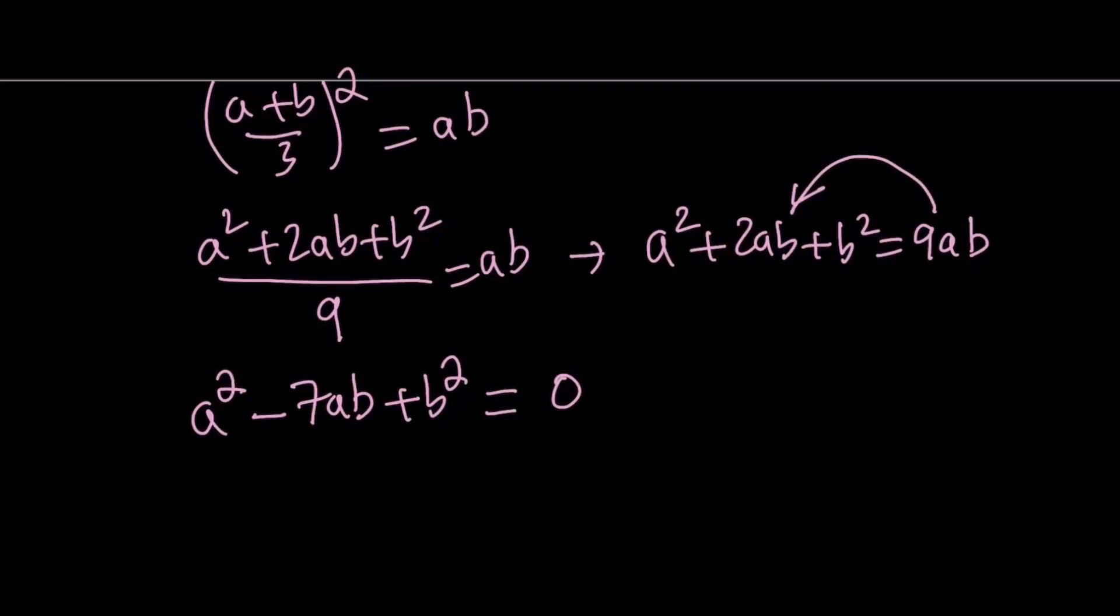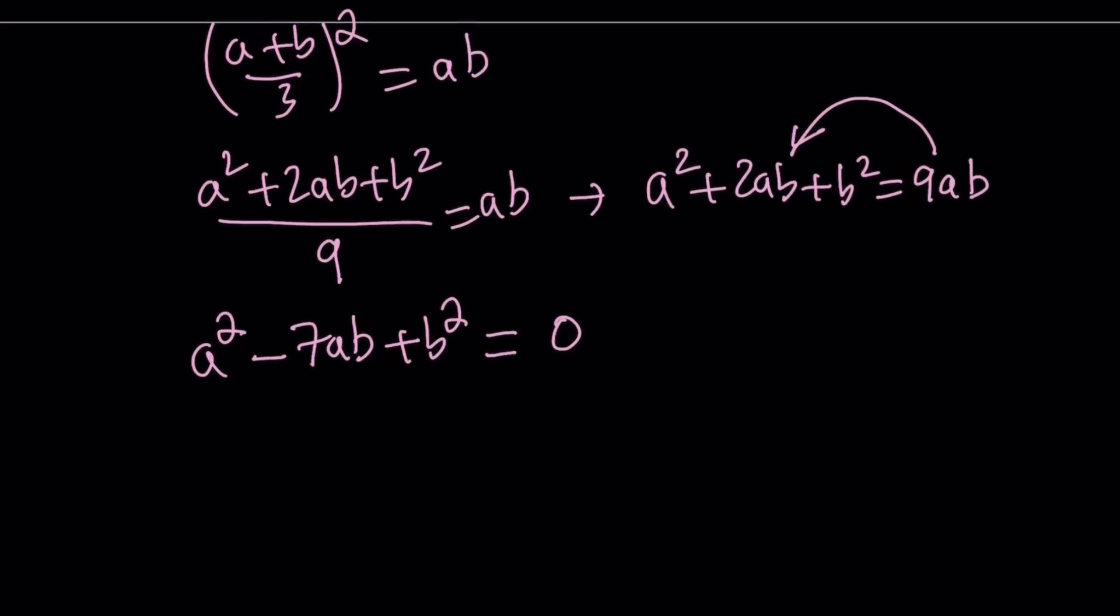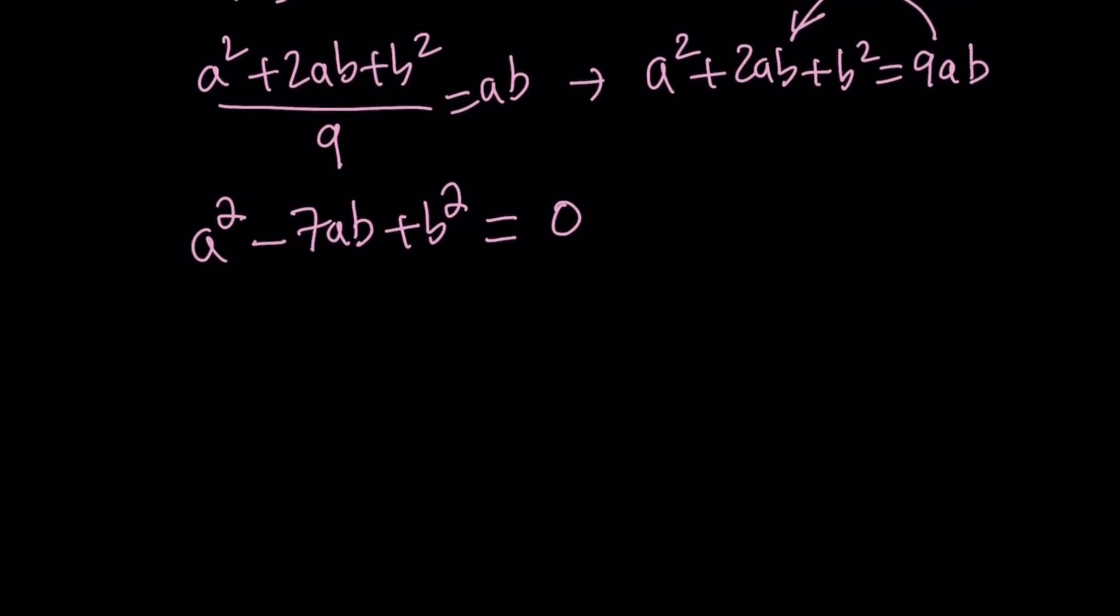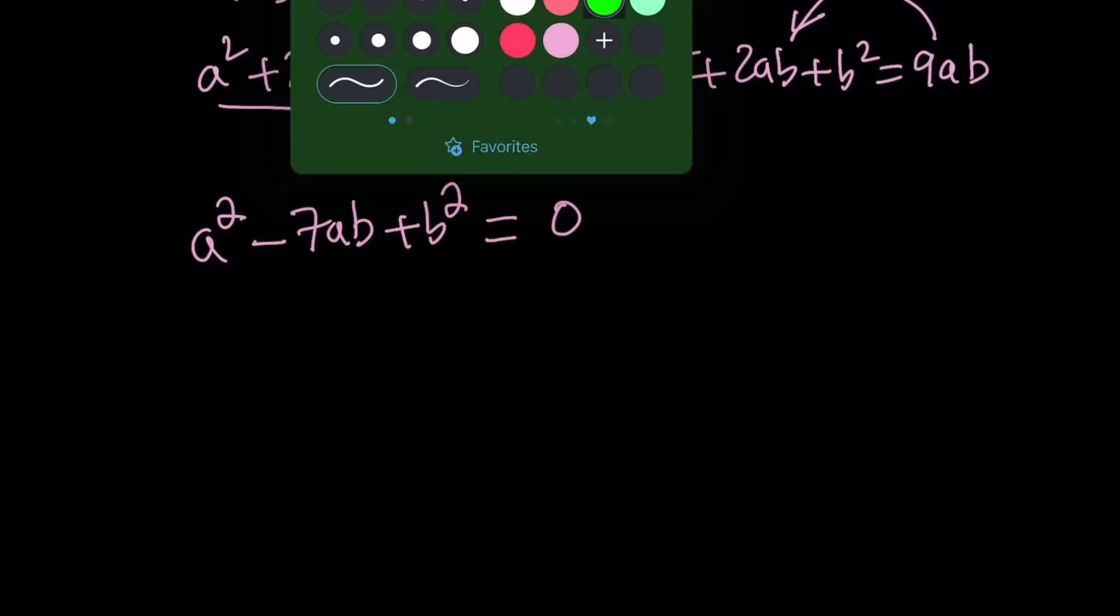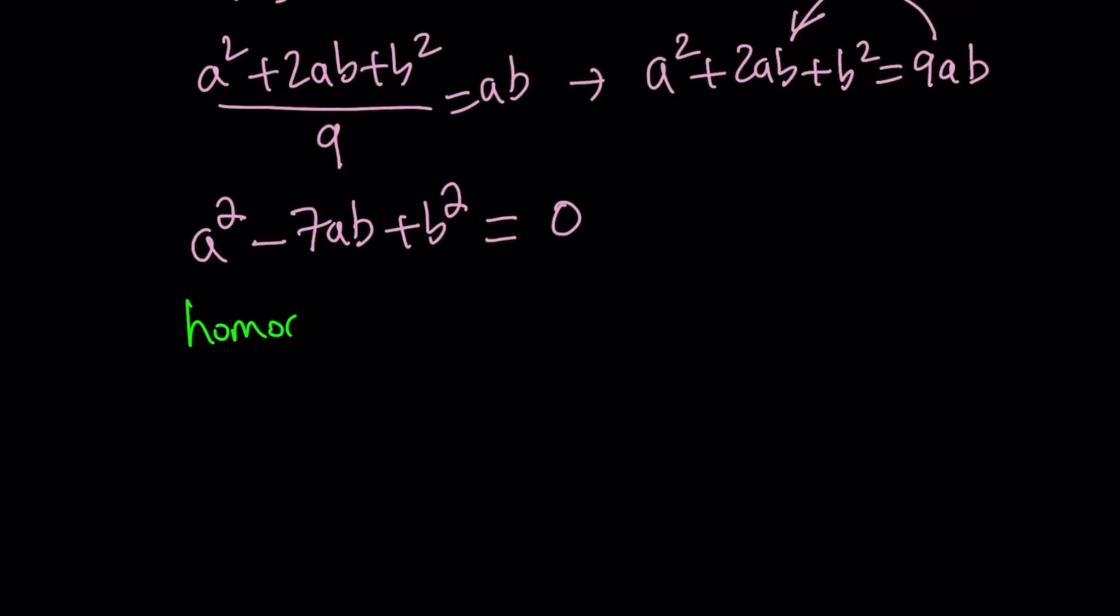I call this a quadratic because every term is basically a second power, but there are two variables. So we need to turn this into something more manageable. And remember, we're looking for a/b, right? So how do you find a/b from here? So one thing we need to recognize is this is a homogeneous equation. And in homogeneous equations, we can actually use a third variable. In other words, we can just set a/b equal to k. And remember, that's what we're trying to find. And from here, we get a = kb. So we're going to replace a with kb everywhere.